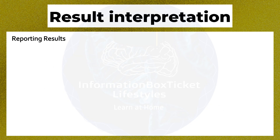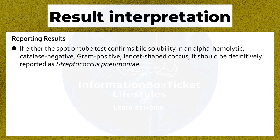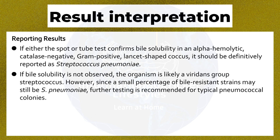Reporting Results: If either the spot or tube test confirms bile solubility in an alpha-hemolytic, catalase-negative, gram-positive, lancet-shaped coccus, it should be definitively reported as Streptococcus pneumoniae. If bile solubility is not observed, the organism is likely a viridans group streptococcus. However, since a small percentage of bile-resistant strains may still be S. pneumoniae, further testing is recommended for atypical pneumococcal colonies.